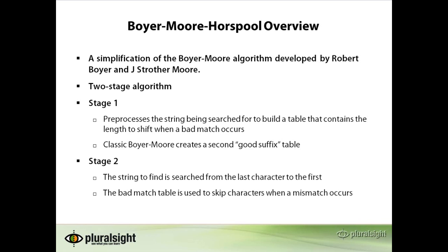Once stage 1 is complete and the table is built, stage 2 will perform the search algorithm by comparing the string defined against the string to search for. Only instead of comparing the string from left to right, it will compare it from right to left. This allows for more efficient bad match character skipping when a mismatch is found.